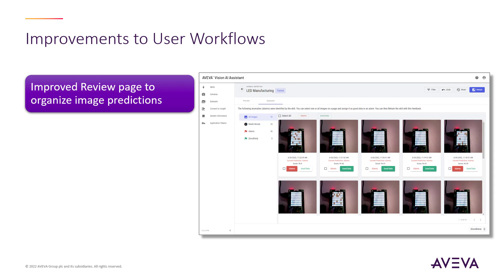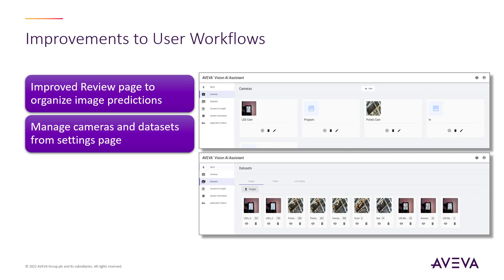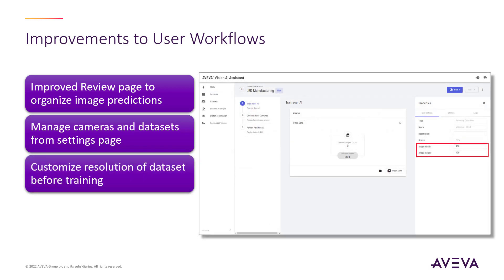There have been a range of improvements to user workflows and overall user experience in Vision AI Assistant 2021 R2, including an improved review page helping customers organise their library of images for review and retraining. Customers can now manage their cameras and data sets directly, rather than only within the skills in which they're used. Customers can also adjust the resolution of their data set used for training, helping them adjust the size and quality of images based on the application.